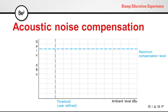When passing a signal through this processor, if the noise is below the threshold level, the output will be maintained at unity gain. If the ratio is set to 1 to 1 and the noise floor raises above the threshold, the gain will increase at the same rate as the noise, but only up to the maximum compensation level.